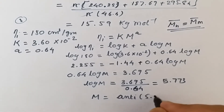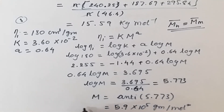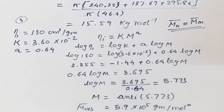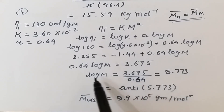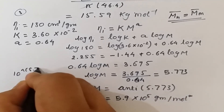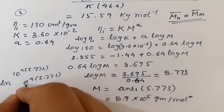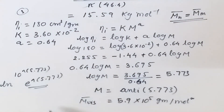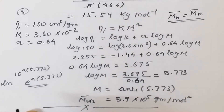Taking the antilog: M = 10^5.773 ≈ 5.9 × 10⁵ grams per mole. This is the viscosity average molar mass of the given polymeric solution. To compute antilog on a scientific calculator, use 10 to the power of the value; for natural log, use e to the power. Hope the numericals were clear — if you want more, let me know in the comments. Thank you very much.